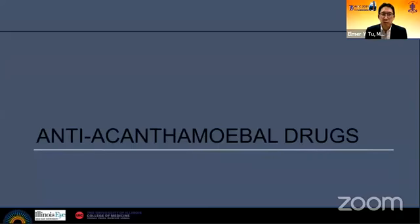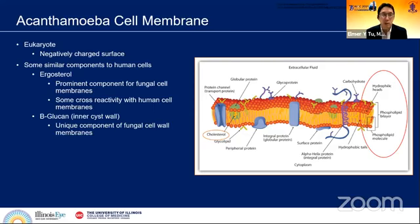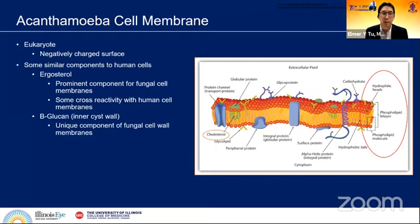In general, if you think about anti-acanthamoebal drugs, they act on acanthamoeba, which is a eukaryote. It has a very negatively charged surface, which is important in choosing medications for it. It has some similar components to human cells, in the form of ergosterol, which is also found in fungal species but is a relative of cholesterol, a component of human cells. They also have a unique component of beta-glucan, which is found in fungal cells but also in the inner cell wall membrane of acanthamoeba.